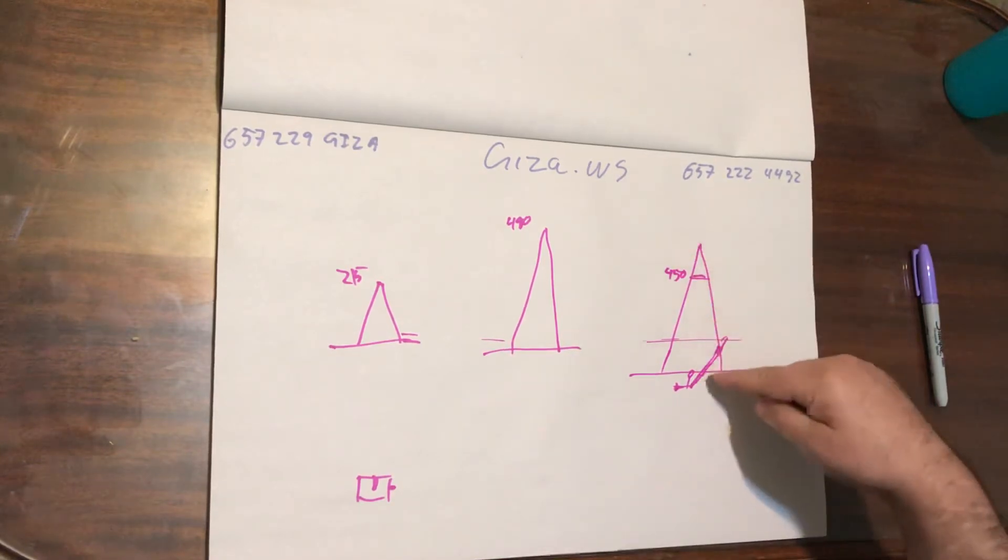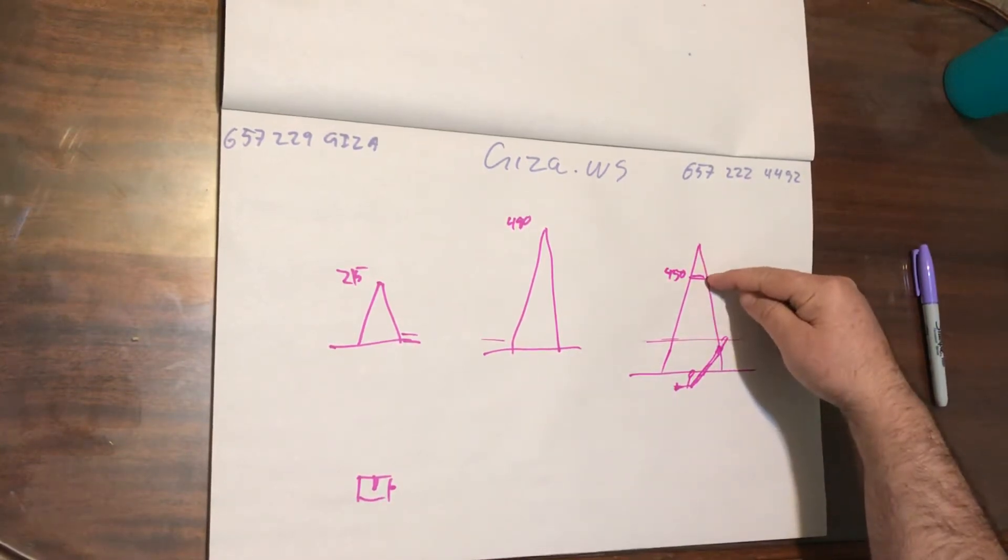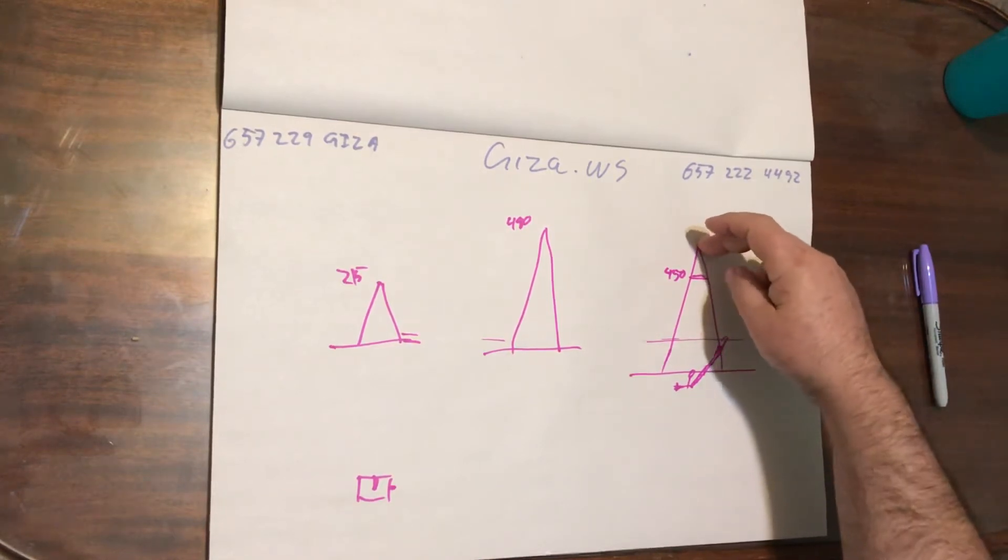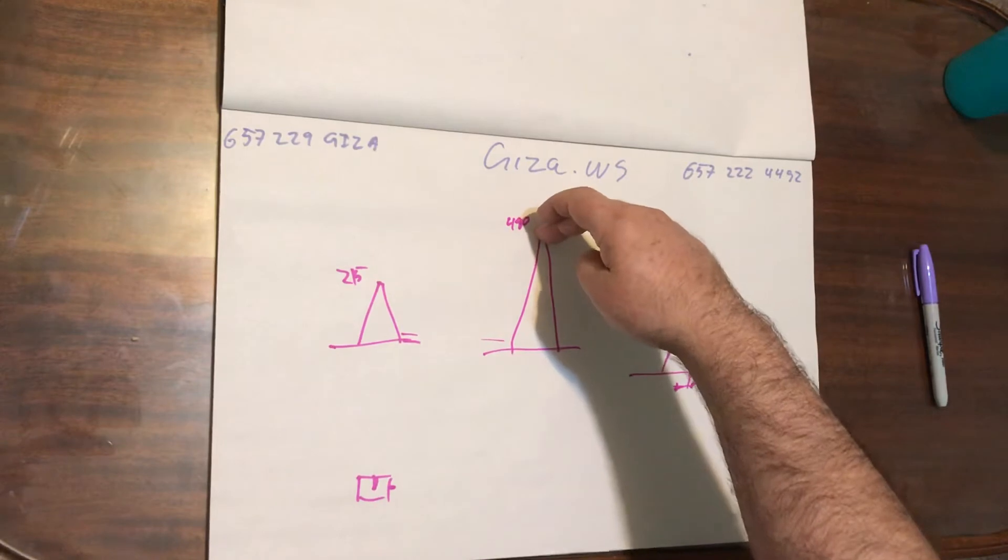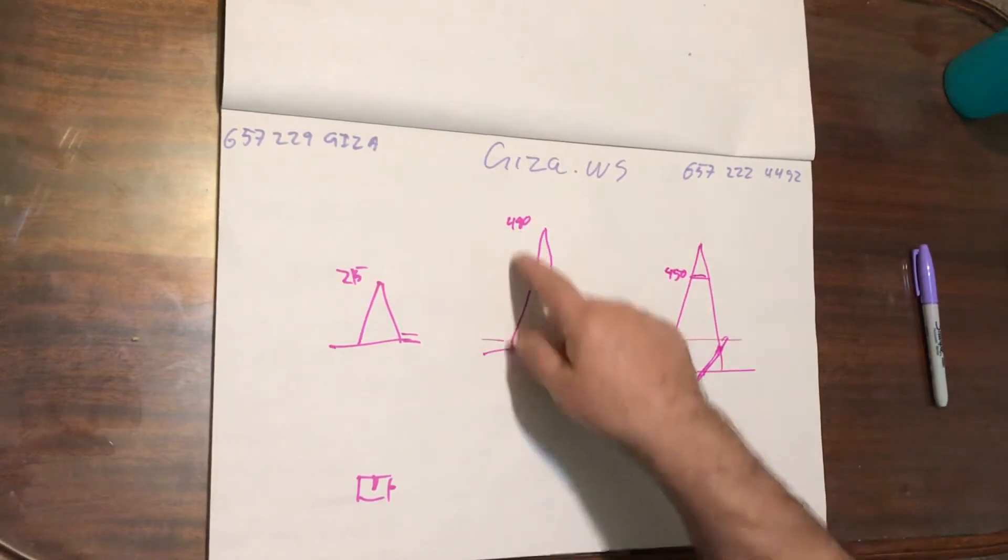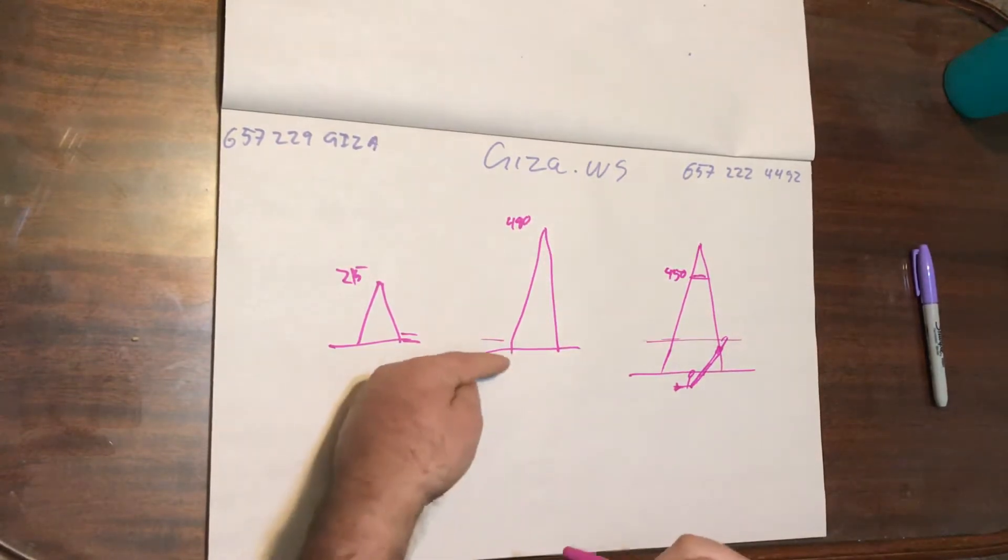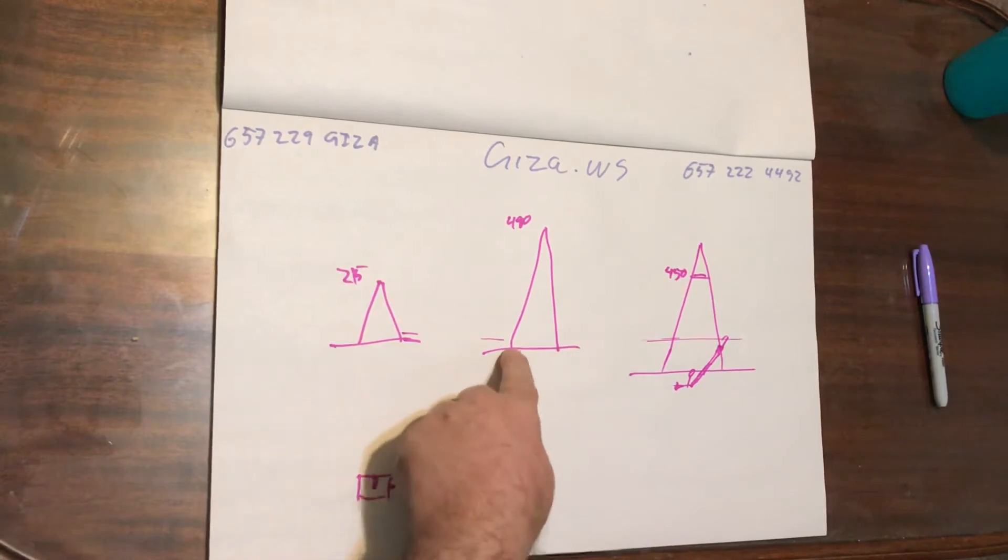The largest one from its base to its highest elevation is about 450 feet. If extended to its apex, which is where this is, this one is 480 feet because it's at a higher elevation ground level.